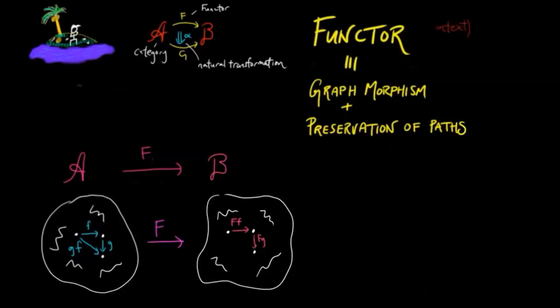A functor is an assignment of morphisms which preserve zero paths, in other words identity morphisms, and two paths, in other words composition. By using induction, we can then show that all paths are preserved under the functor.